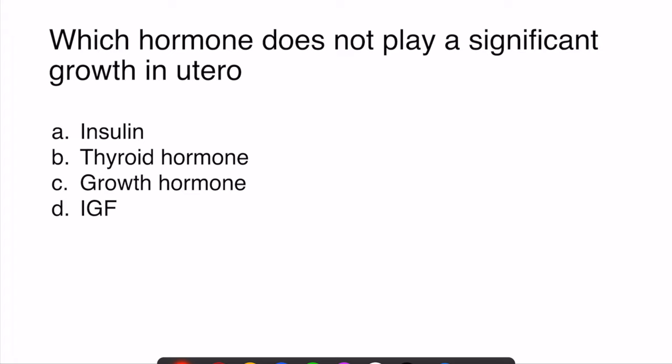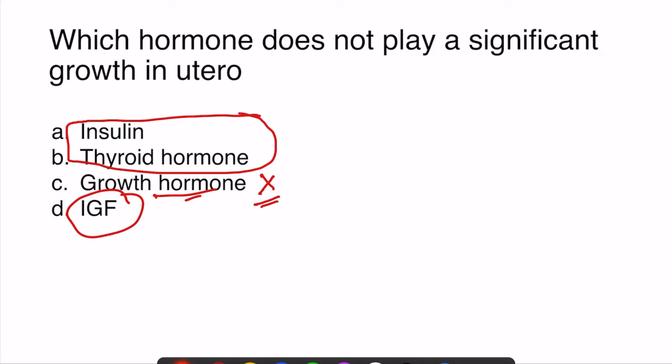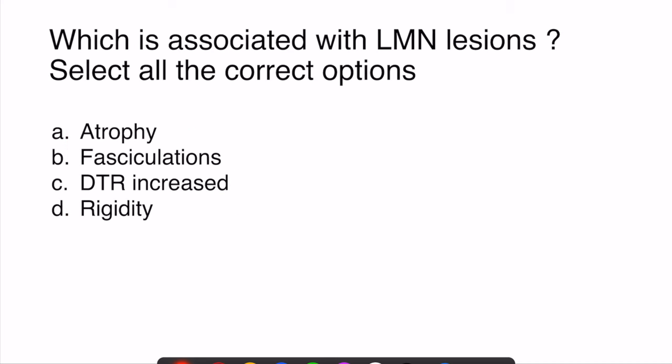The next question asked which hormone does not play a significant role in growth in utero. This topic has been recently added to the competency curriculum. Insulin is important for growth in utero. Growth hormone, while important postnatally, hardly has any role in fetal growth. IGF — both IGF1 and IGF2 — is important for growth in fetal life. This was a straightforward question taught many times during MBBS.